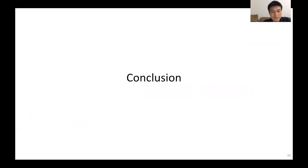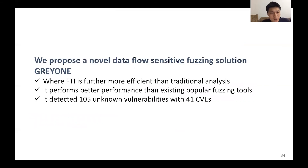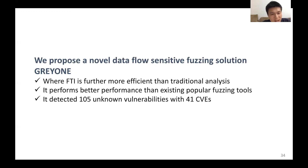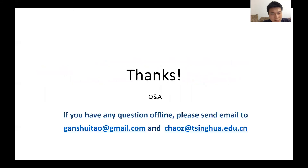In conclusion, we proposed a novel data flow sensitive fuzzer GREYONE, where FTI is far more efficient than traditional taint analysis. It performs better than existing popular fuzzing tools and detects more than 100 vulnerabilities with 41 CVEs. Thank you very much. If you have any questions, please send an email to us.